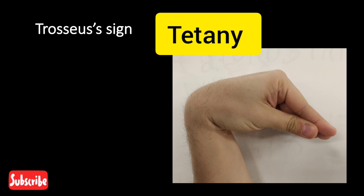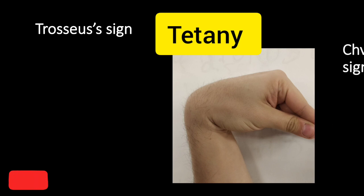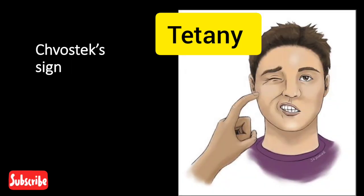Trousseau's sign: it is seen in tetany, in cases of hypoparathyroidism. Trousseau's sign is the appearance of carpal spasm upon application of pressure on the arm by inflation of the sphygmomanometer cuff.